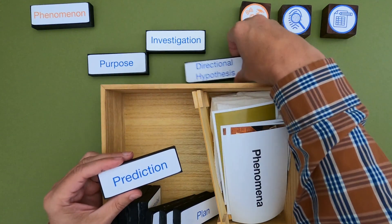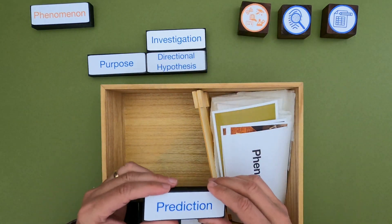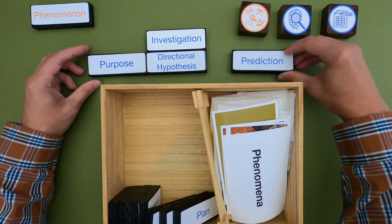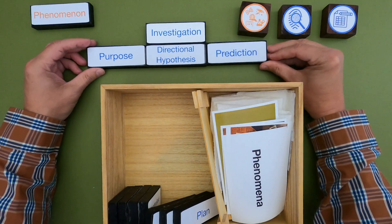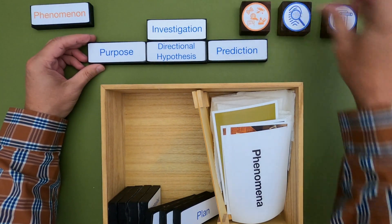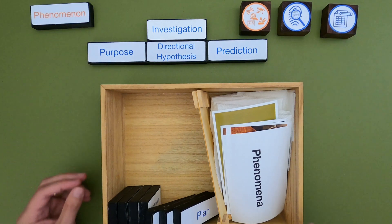The parts of a good investigation will always begin with the purpose. We'll then talk about how to develop a directional hypothesis, and then finally a prediction — so you're making some prediction based on how you think the results are going to come out.